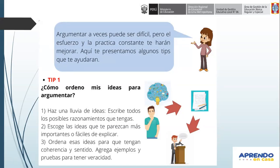No es que de la nada aparezca el mejor argumento rápidamente. Es mejor que escribas varios — dos, tres argumentos en un borrador. Y si es que el profesor te pidió uno solo, pues te des cuenta cuál es el mejor o el más consistente, o cuál es posible conseguir evidencias o pruebas. Es mejor escoger las ideas que te parezcan más importantes o fáciles de explicar. No porque la mayoría de tu salón haya puesto esa idea vas a poner otra si no tiene coherencia ni sentido. Es mejor poner un argumento que sí tenga coherencia y sentido. Después de ello ya se agregan los ejemplos y las pruebas o evidencias, para saber si es verdad o no.